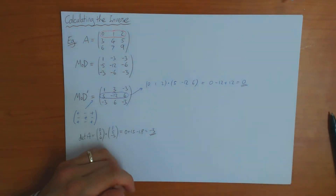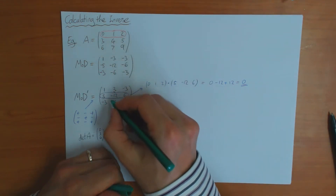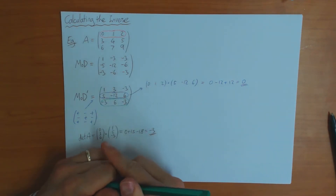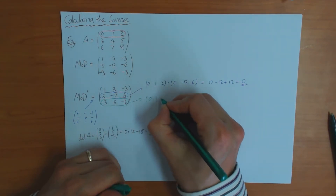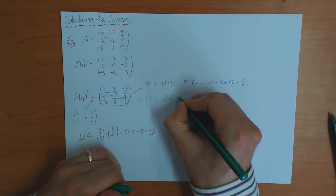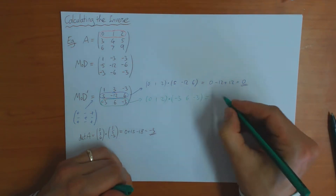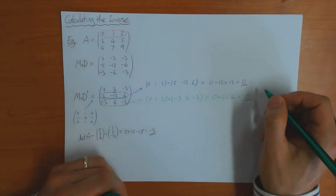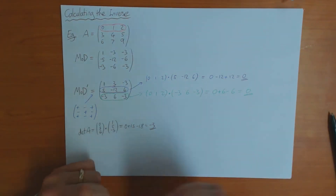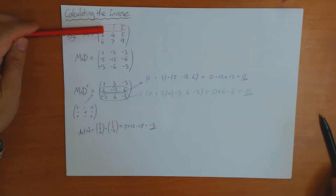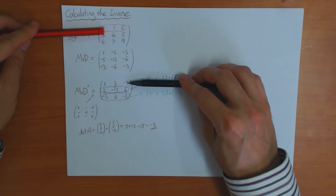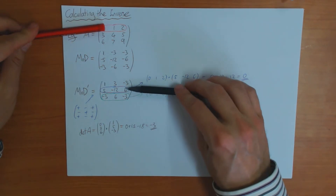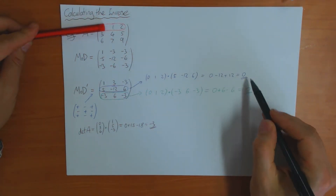And that's not a coincidence. If I take the first row of A and the third row of MOD prime, I get 0, 1, 2 dot -3, 6, -3. That's 0 + 6 - 6, which is also 0. So if you pick the same row of A and the same row of this matrix, you get the determinant. But if you pick a different row, the answer is always 0.